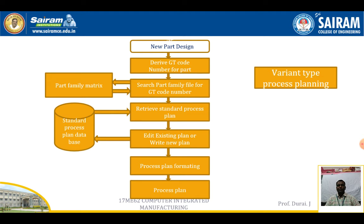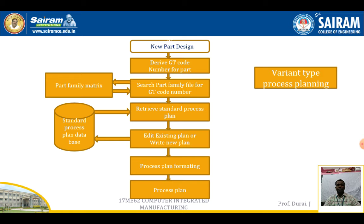GT code — Group Technology — defines similar types of components stored within a group technology system. In the part family, similar types of components are stored according to their geometrical shape and size. Once the GT code number has been derived, the next step is to retrieve the standard process plan from the process plan database according to that GT code number.